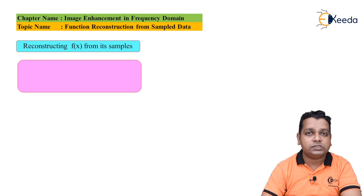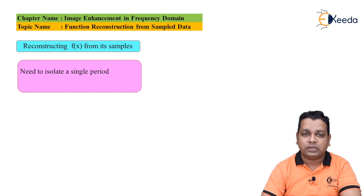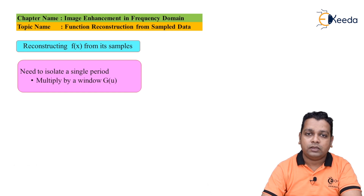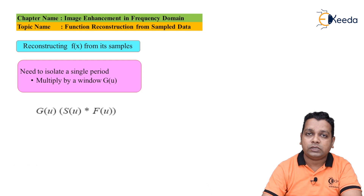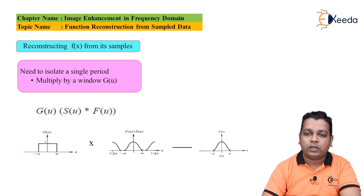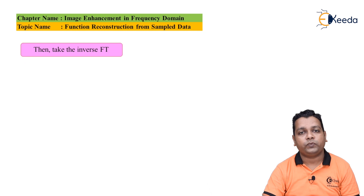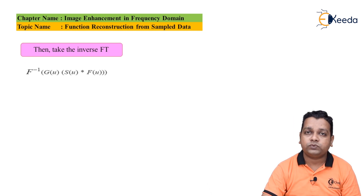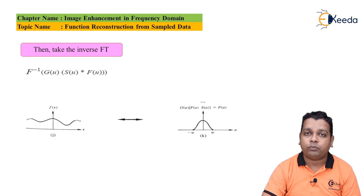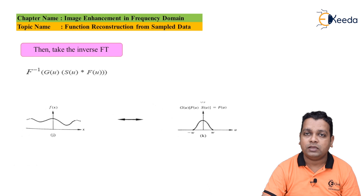To reconstruct the original one-dimensional signal f(x) from its samples, we need to isolate a single period. Multiplication by a window function G(u) — a pulse of amplitude one for the duration minus W to plus W — is applied to the convolution of S(u) and F(u), yielding F(u). Then taking the inverse Fourier transform of G(u) multiplied by this convolution result gives us f(x) with continuous values in the spatial domain.